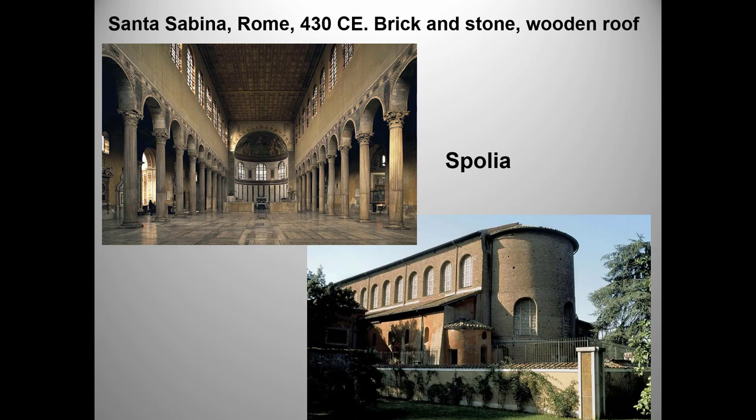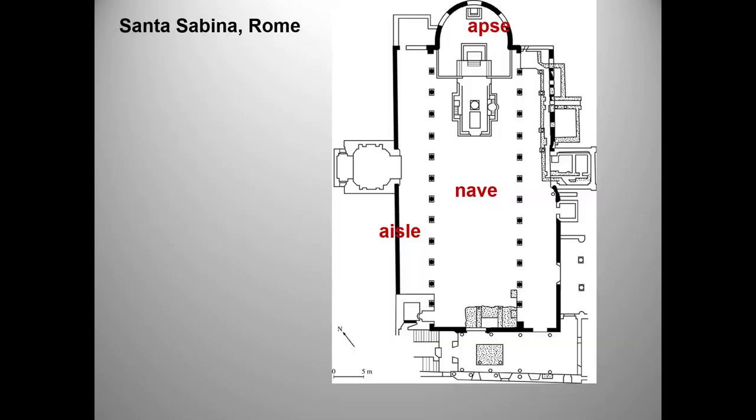What basilican features do you see? There's a high flat roof, side aisles with a lower roof — you can see them sticking out in the photo of the exterior — and a rounded apse at one end. Early basilican churches also tended to have timber roofs. Here is Santa Sabina's floor plan, another required image.